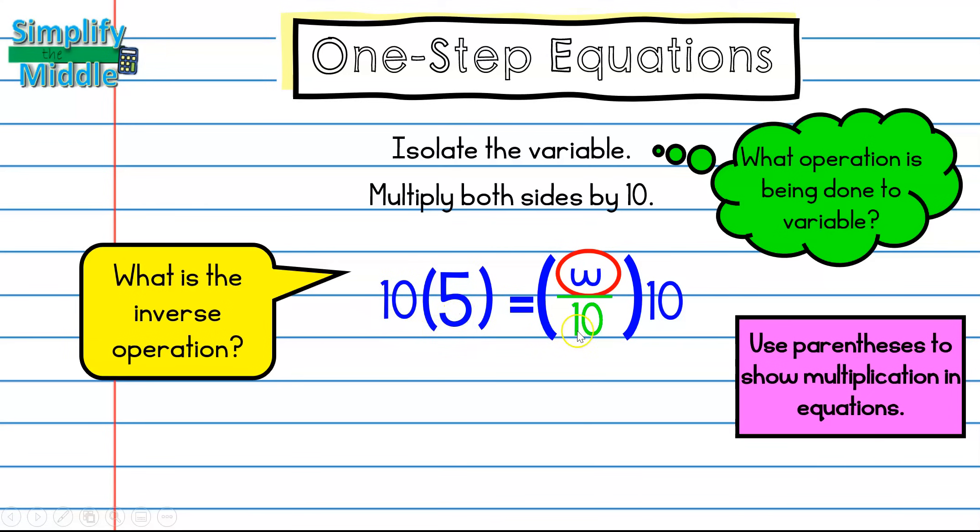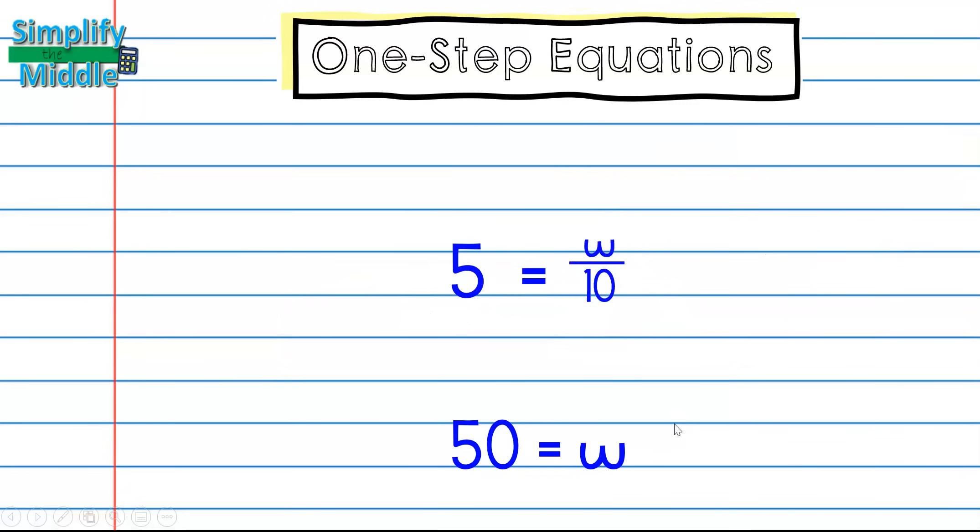So 10 times 5, and then here I have 10 times essentially 1 tenth. And so those 10s will cancel out because that's really 10 divided by 10 or 1. So I end up with 50 equals w. I can plug this back in to see if I'm correct. And 50 divided by 10 is 5. So 5 equals 50 divided by 10. I'm correct.